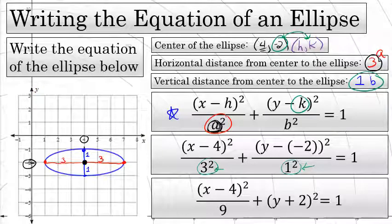The second term will just be (y + 2)². The equation of every ellipse in standard form is equal to 1. The equation of the ellipse pictured on the left side of the screen is (x - 4)² / 9 + (y + 2)² = 1.